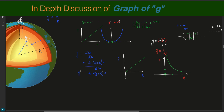If we extend this graph to the negative side, for negative values of x, y is still positive since x is squared, so the graph will be symmetrical around the y-axis. So we now have the idea: when moving outside the Earth, the graph will look like a rectangular hyperbola, and when moving inside the Earth, the graph will look like a straight line.